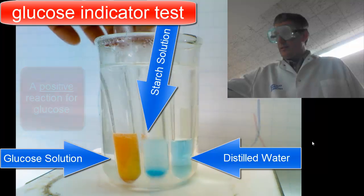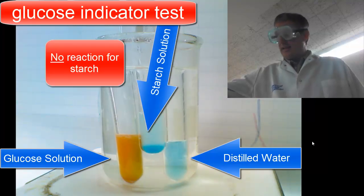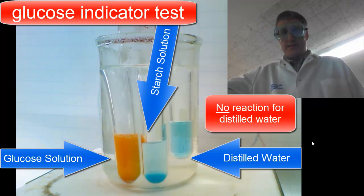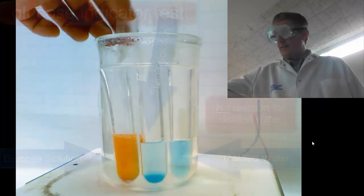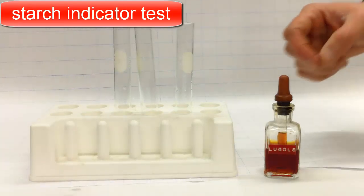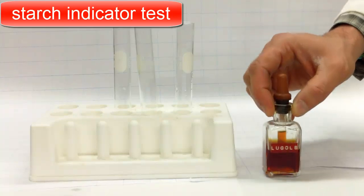Notice that the test tube with the starch solution, there's no reaction. The test tube with the distilled water, no reaction. Now we need to complete table 2 by using the starch indicator solution, iodine.